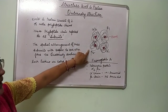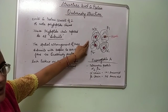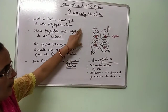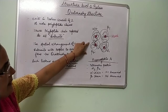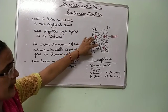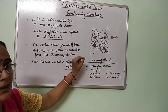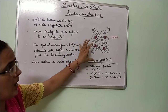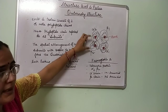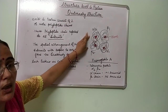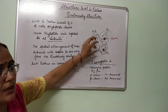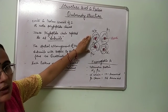In hemoglobin, there are four polypeptide chains — two alpha and two beta chains. Each of these polypeptide chains has a definite three-dimensional conformation, and these polypeptide chains are further bonded to each other by various types of non-covalent interactions to form a definite quaternary structure.